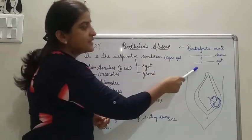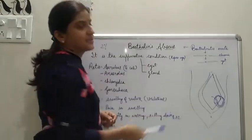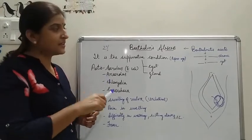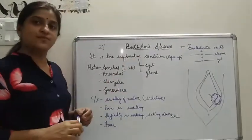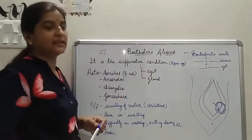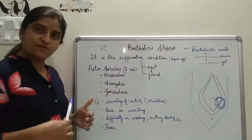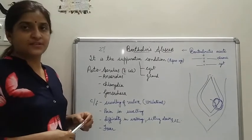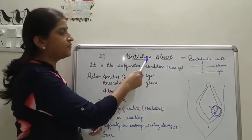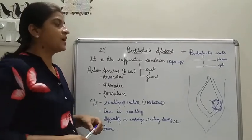When Bartholinitis is not treated in time, it may cause chronic Bartholinitis. It may also cause a cyst in the Bartholin gland, called a Bartholin cyst. If this cyst is superimposed by bacterial infection, then Bartholin abscess is formed. This is a suppurative condition with collection of pus.